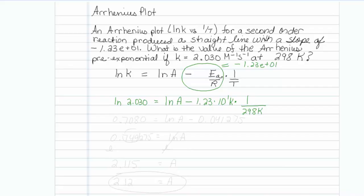So let's see. Natural log of 2.030 equals 0.7080, which equals natural log of A. And this term, negative 100,